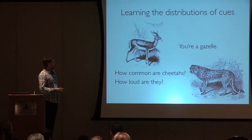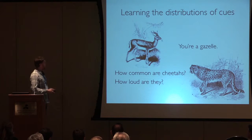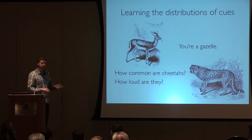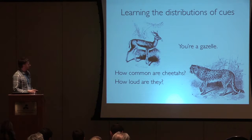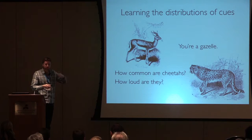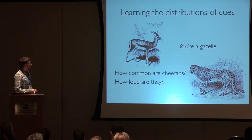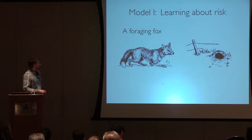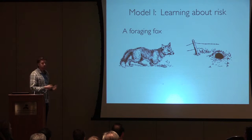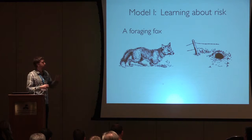In order to get at that learning, there are two things you actually need to learn about. A simple example: you're a gazelle and you need to avoid cheetahs. You need to know two things — how common are cheetahs, and also what are the signs of a cheetah potentially stalking you, and how should you set your signal detection threshold? I'll describe the model we've developed by walking through a simple toy example. The first model is a very simple one drawn straight from behavioral ecology, dealing only with the first question: learning about how prevalent dangers are in the environment, setting aside the issue of how to set your signal detection threshold for the moment.